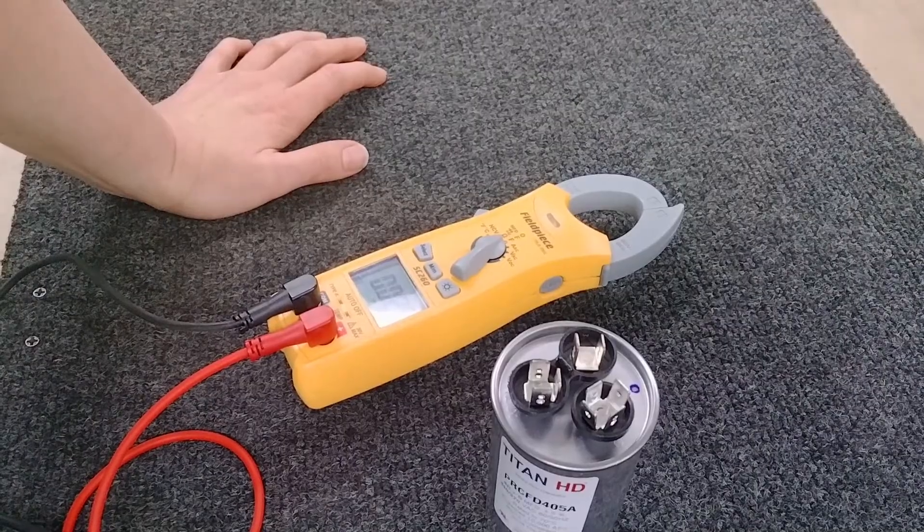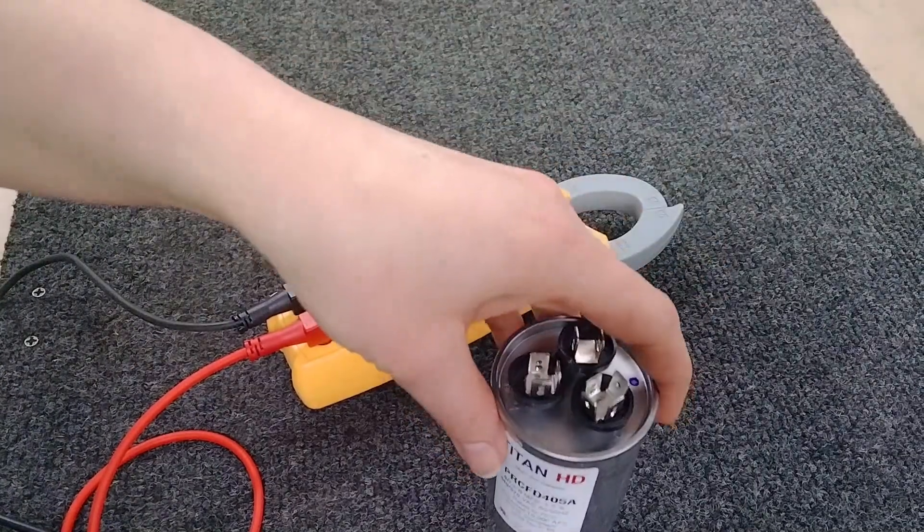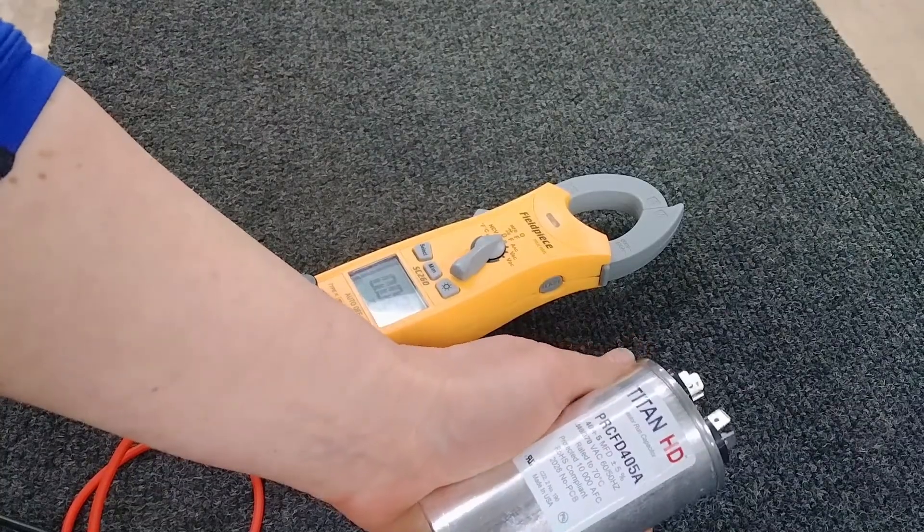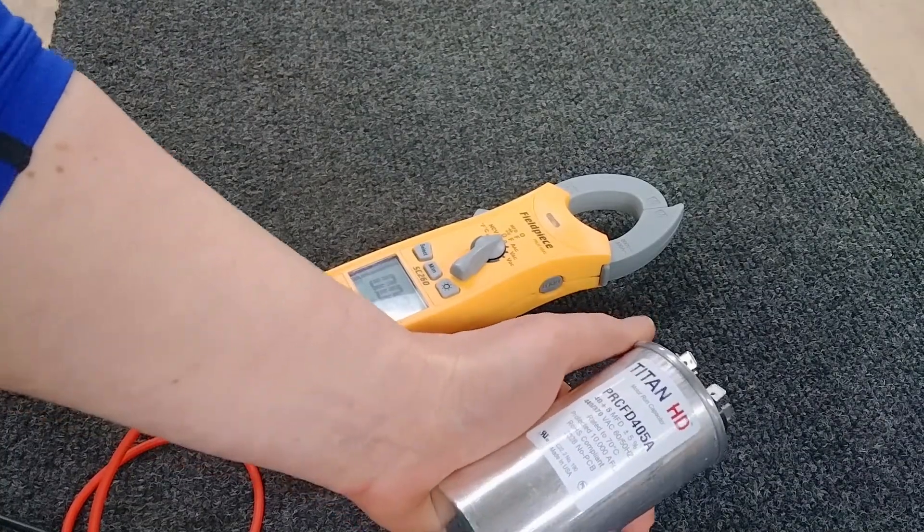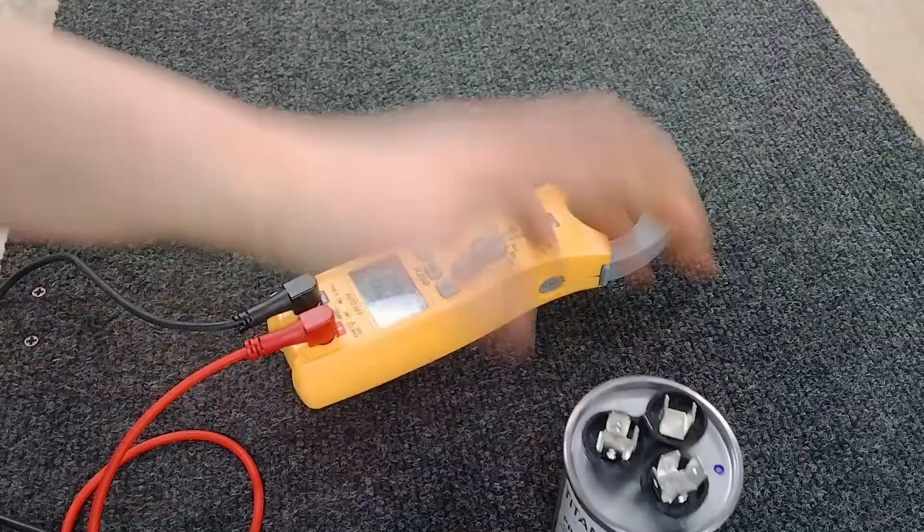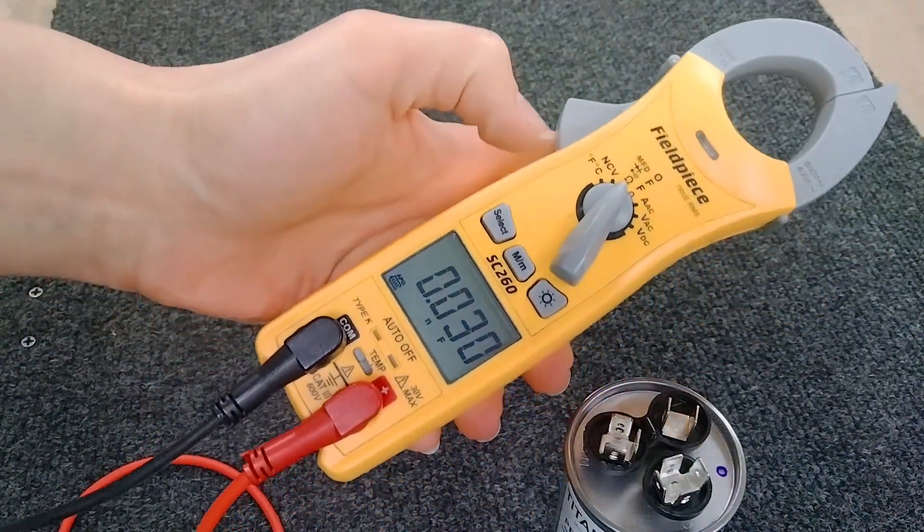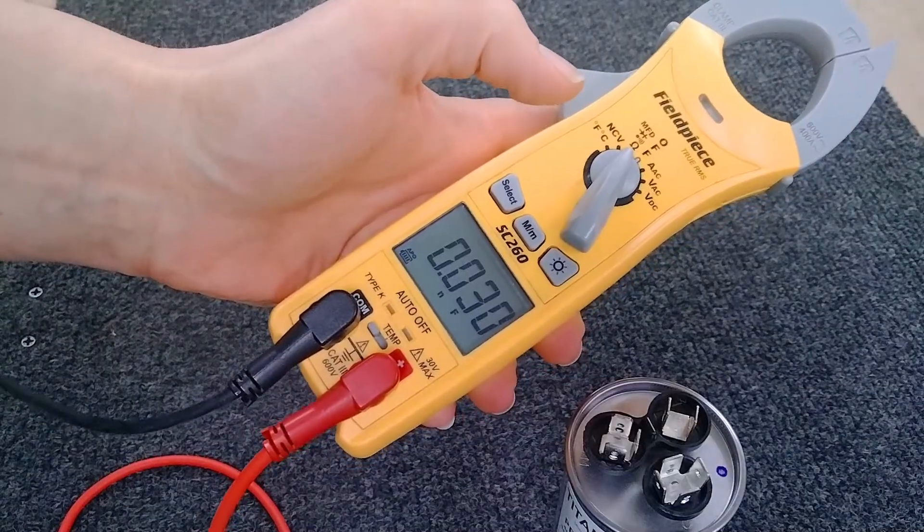Hi, this is Crystal with Open to Public HVAC Parts. Today I'm going to explain the difference between using an analog meter to check ohms versus using a clamp meter like this Field Piece ST260 to check your capacitance.